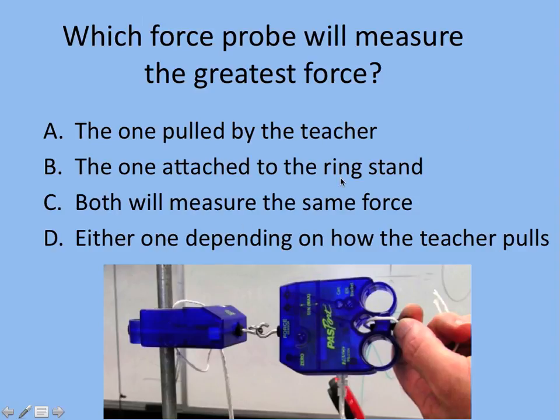How about this? I have a force probe hooked to a ring stand, attached to a ring stand, and it's just going to sit there. I'm going to hook another force probe onto it, and I'm going to pull back. So which one is going to show the greatest force? We'll view this on a graph. The one pulled by me, the one attached to the ring stand, both are going to be the same, or either one. So pick your answer, pause this, think about it. Here comes the same force. If the teacher pulls with a force on the ring stand, the ring stand pulls back with an equal, oppositely directed, simultaneous force. And because these are force sensors, we can see that.